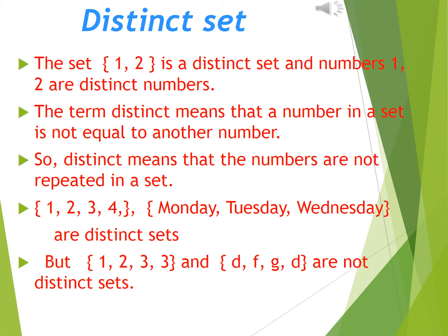For example, {1, 2, 3, 4}, the set of first four natural numbers, is a distinct set since all the elements have appeared only once.